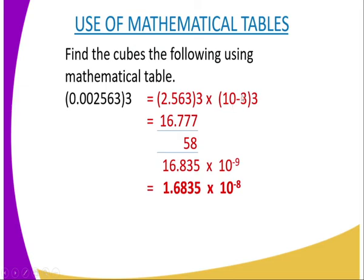And this was 10⁻³. So you, negative 3, you multiply by 3 because it is a cube, you will get 10⁻⁹. And this one, if you write this one in standard form, it becomes 1.6835 times 10¹.